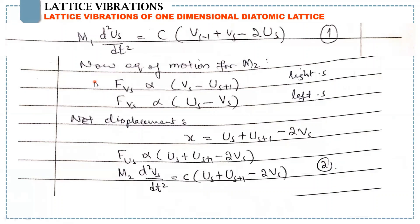Using the same steps for finding the equation of motion for M2: force on V_S is proportional to (V_S minus U_{S+1}) for the right side, and for the left side force is proportional to (U_S minus V_S). Taking the net displacement and putting it into Hooke's law, we get M2 times the second derivative of V_S with respect to time equals C times this expression. Let's call this equation number 2.